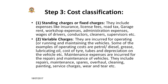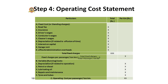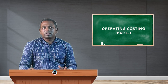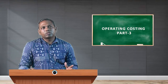The last step is to prepare the operating cost statement. When you prepare this statement, it helps you calculate the operating cost per passenger in the case of a simple cost unit, or the operating cost per passenger per kilometer when using a composite cost unit. In the next class we will discuss and solve a problem based on this format.